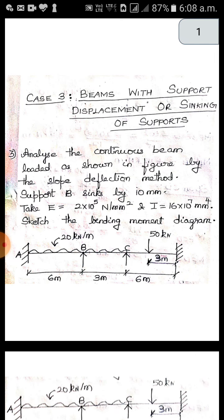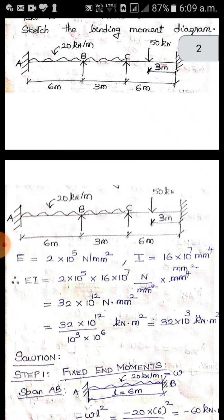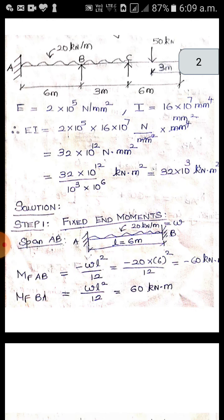The problem is continuous beam A, B, C, D. A and D are fixed and it is continuous over B and C. Now you have to remember if there is a problem with sinking of support they will give you the values of E and I. Without giving the values of E and I you can't do the problem with sinking of support. So multiply E into I. You will get the answer in newton mm squared. Here it is 32 times 10 power 12 newton mm squared. You have to convert that into kN m squared.